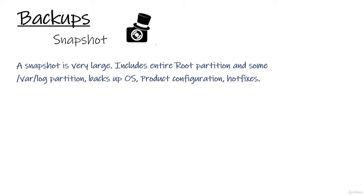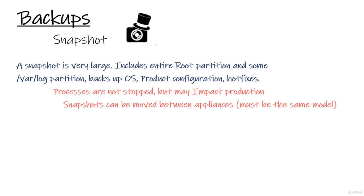What it actually is — it creates a binary image of the entire root disk partition. It includes almost everything: things like Checkpoint blades, configuration, operating system, and hotfixes. It can be performed via CLI or web UI. The process takes from 30 to 60 minutes and it does not stop Checkpoint processes and daemons.